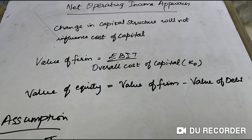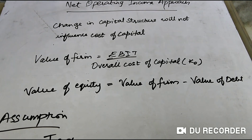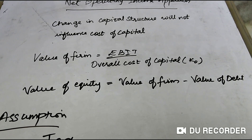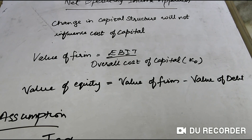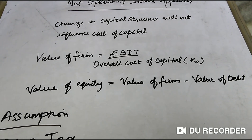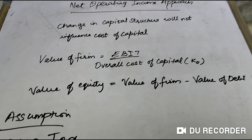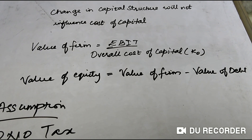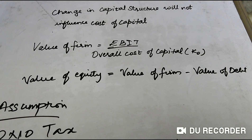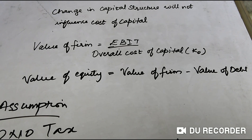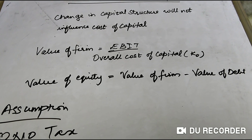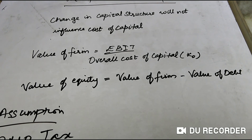Similarly, here also we have to find out the value of the firm, value of equity, and debt. One of the values — equity or debt — will be given in the problem and we have to find the other. The formula to calculate value of the firm is: Value of Firm = EBIT divided by overall cost of capital (K0). Value of equity = Value of firm minus value of debt.